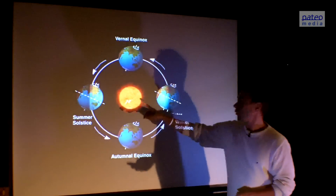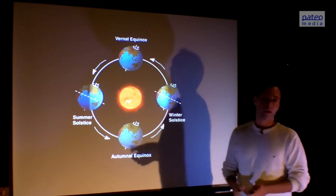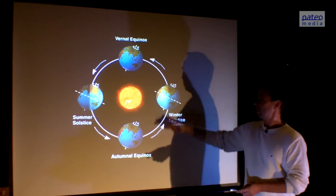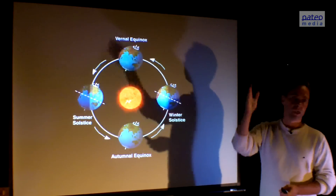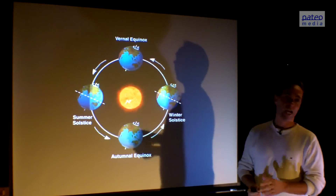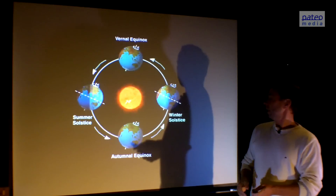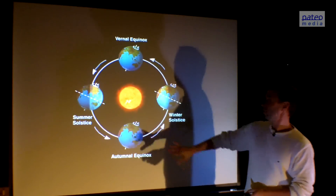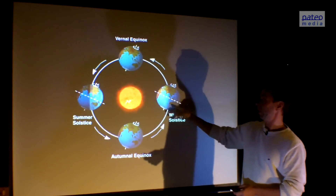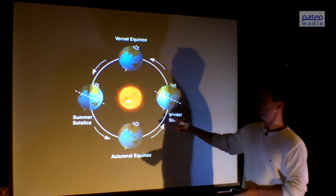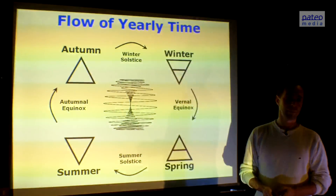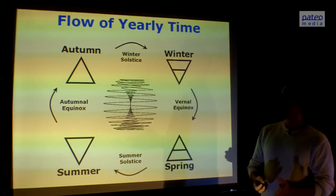Here we see another orbit. Terra is moving around Helios in a year's time. Because the axis of rotation is not perpendicular to the ecliptic — it makes an angle of about 23 and a half degrees — we have the four seasons. Most energy is now coming to the south, so it is winter on the northern hemisphere and summer on the southern, and here is the opposite. This is the flow of the yearly time.